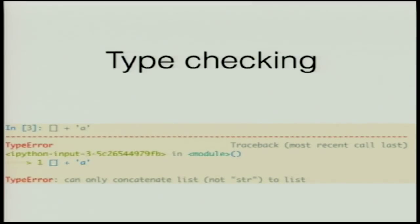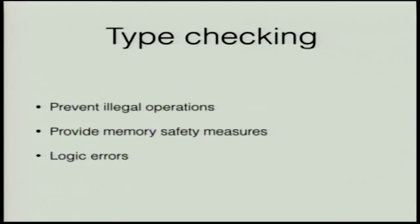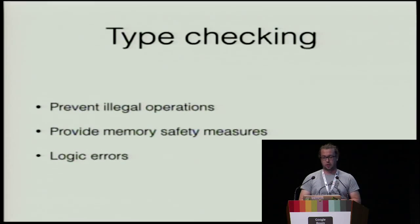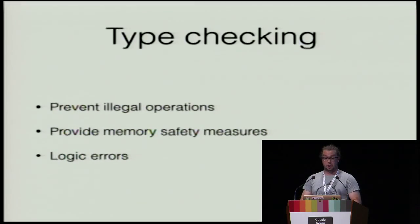With type systems, we have type checking. Type checking, or type safety, is the process of verifying and enforcing constraints of the type system — checking and making sure that the parts have been connected in a meaningful and consistent way. For instance, we cannot add a string to a list. Type checking prevents illegal operations like adding a list with an integer. It also provides memory safety, reducing buffer overflows or out-of-bounds writes that could corrupt the running executable.